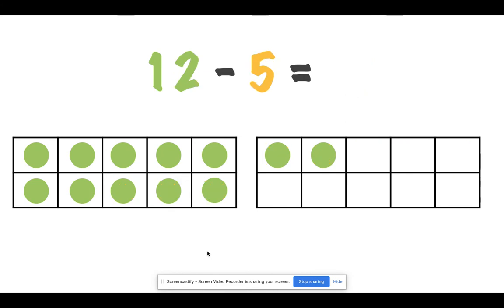What about here? We have 12 minus 5 equals blank. How many counters did we start with? Okay, we started with 12. What is our change? Good. So that means we are going to take away 5. We're going to mark them with an X. Let's take away 1, 2, 3, 4, 5.